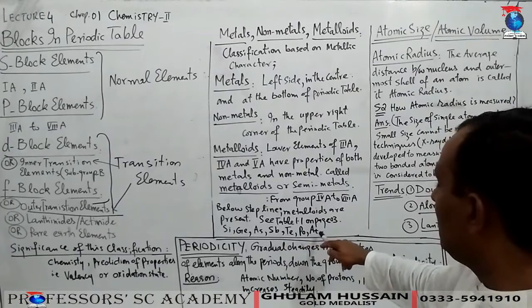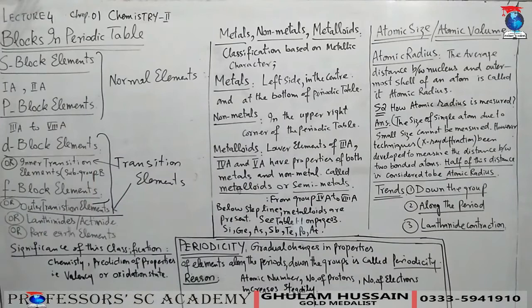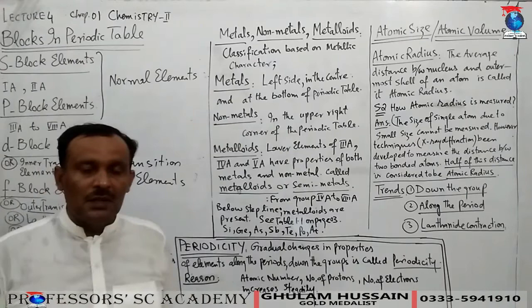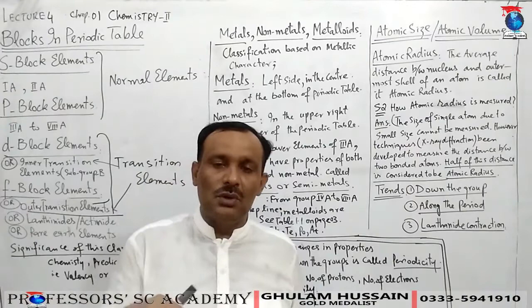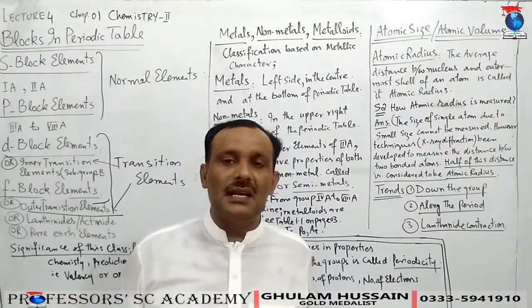Now we have the topic of periodicity. Periodicity is the gradual change in properties — an increase or decrease in the magnitude of properties of elements along the periods and down the groups. This gradual change is called periodicity.